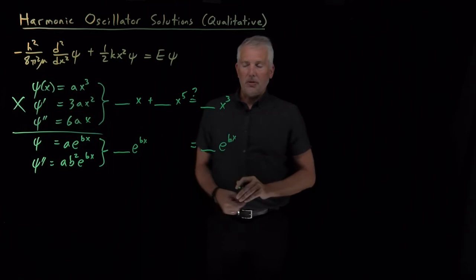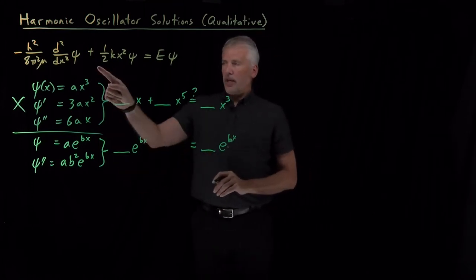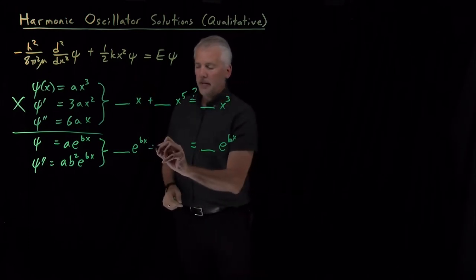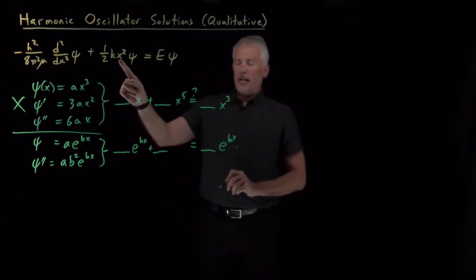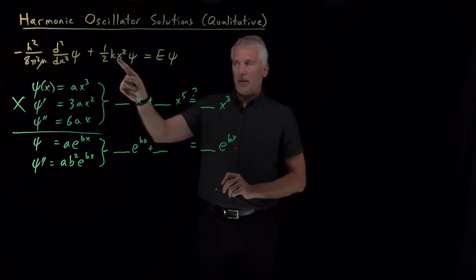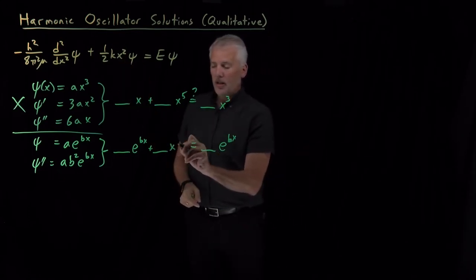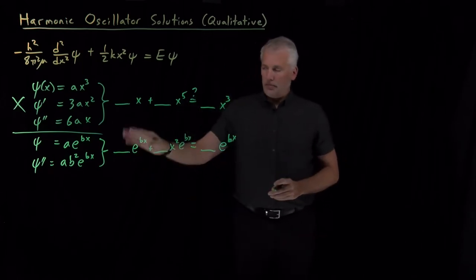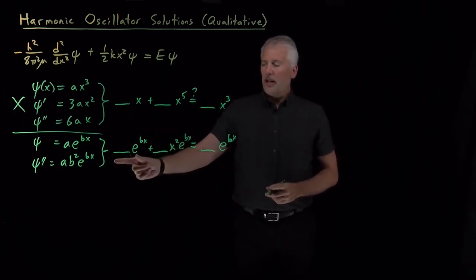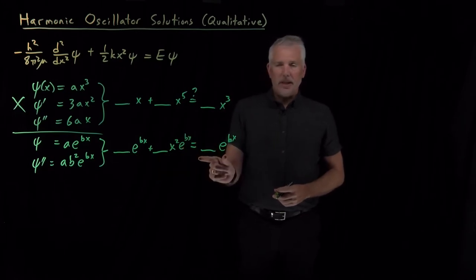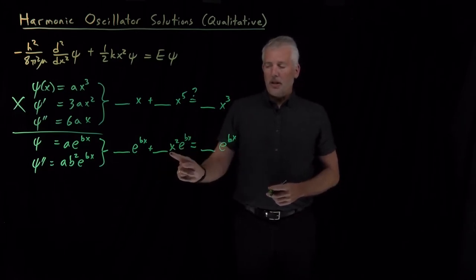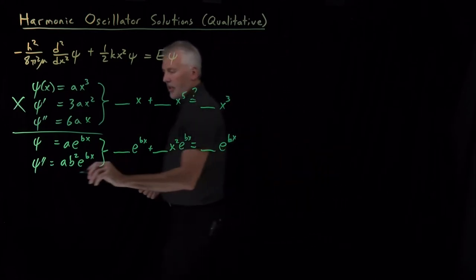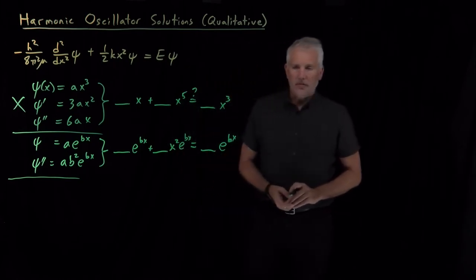Plugging those into Schrödinger's equation: the second derivative looks like e^(bx), and the right side has constants times the original function e^(bx) — so that term matches, which is good. But when we include the potential energy term, one-half kx² times the wave function, we get constants times x² times e^(bx). That x² can't be lumped into the constants, so this term causes problems and the simple exponential doesn't fully work either.